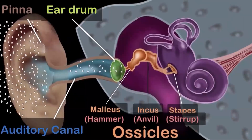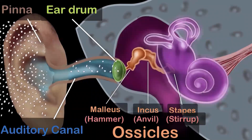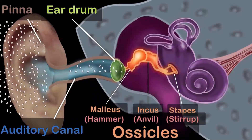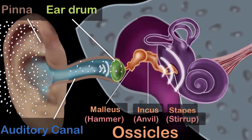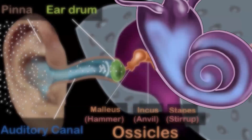As the eardrum vibrates, the ossicles also start vibrating, transferring vibrations from the eardrum to the inner ear. Their main job is to increase or amplify the pressure of the sound waves. We need to increase the pressure because the inner ear contains liquid, not air, and moving liquid particles requires much more force than moving air particles.